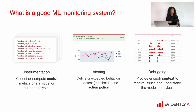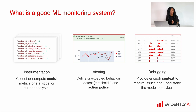How engineers should react and what steps should be taken after receiving specific alerts. Finally, especially when talking about complex machine learning systems, we need to implement debugging. Debugging is very important because we need to provide our engineers with enough context to figure out what has happened with the model and resolve the issue.